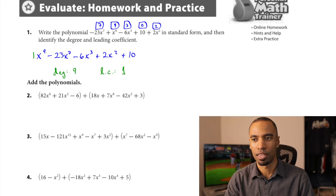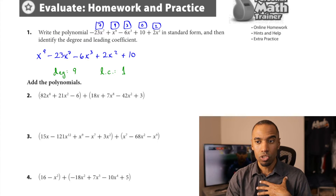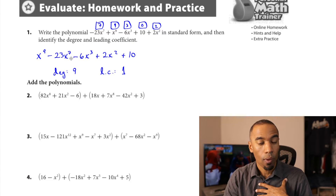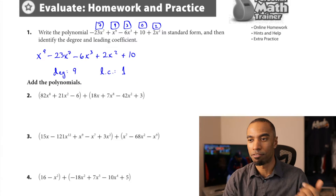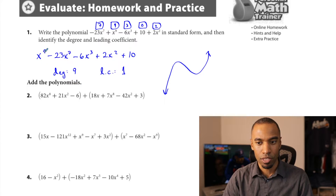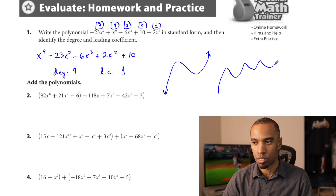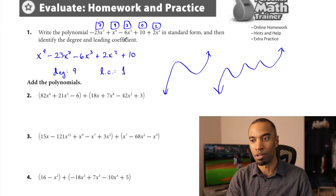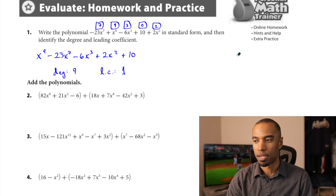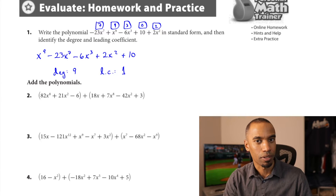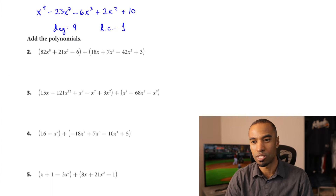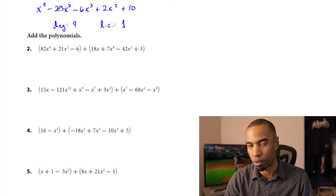We rewrite from highest to lowest: x to the 9th goes first, then negative 23x to the 7th, then negative 6x cubed, then plus 2x squared, plus 10. That's standard form. The degree of the polynomial is 9, and the leading coefficient is 1 — that's 1x to the 9th. Those numbers tell us about the graph: it's an odd-degree polynomial, positive leading coefficient, so it starts down and finishes up.